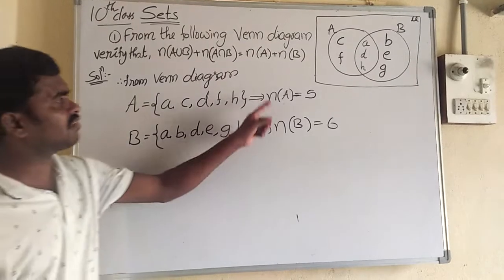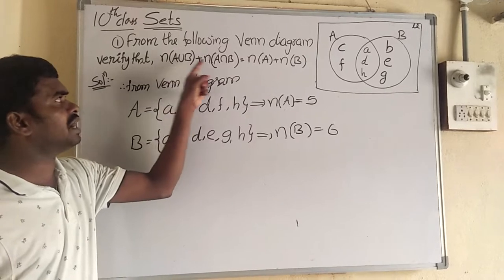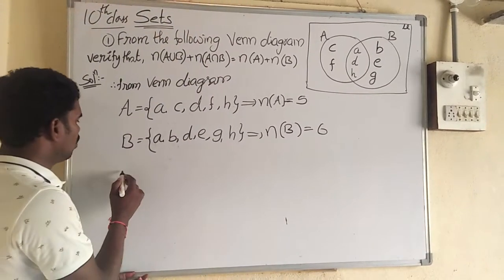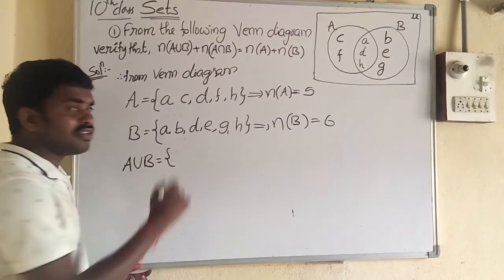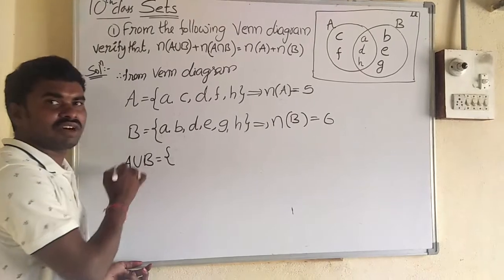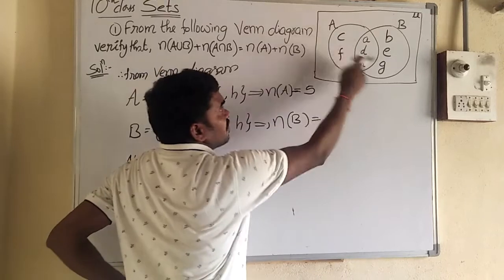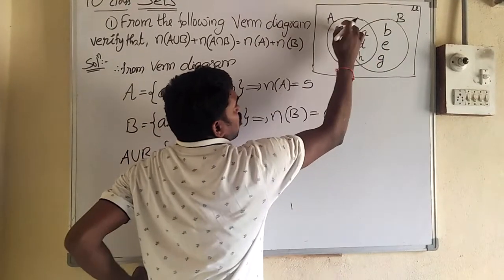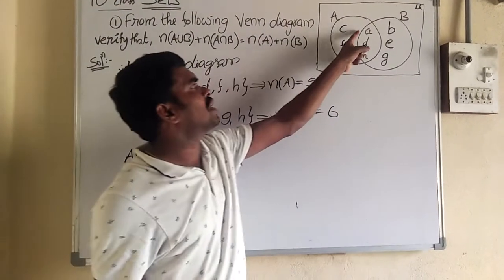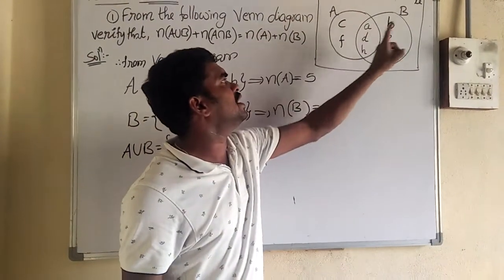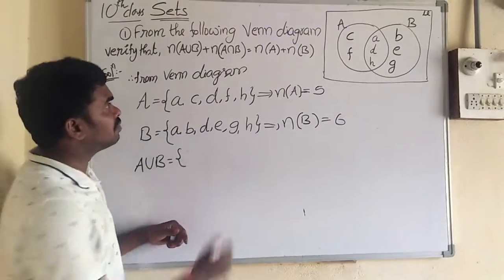We have written N of A and N of B. If you observe the question, we need A union B and A intersection B also. A union B means the set of all elements of A as well as B. So complete elements are taken — A, B, C, D, E, F, G, H. All elements come under A union B.